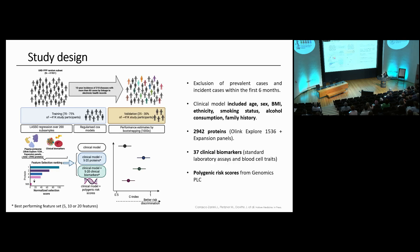We took all participants from the UKB PPP random sub-cohort, excluded those with prevalent status for the disease under study, and divided them into a training and validation set. The training set was used to derive informative proteins to predict disease incidence, using a feature selection strategy based on lasso regression over multiple iterations. This generates a ranking of which proteins are most informative for predicting disease incidence.